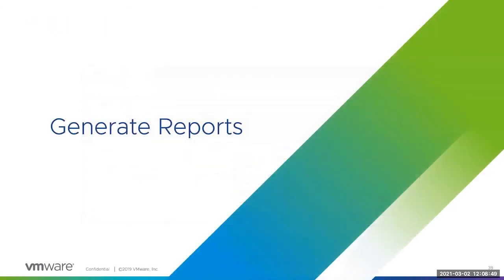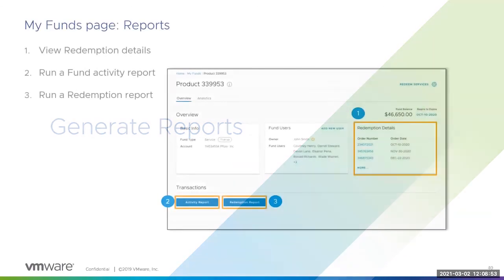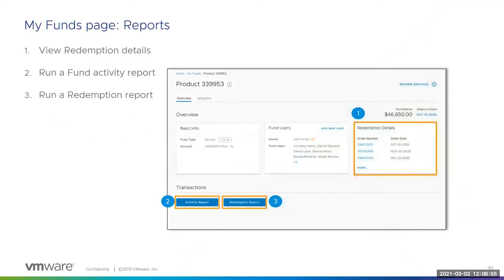There are a few reports available related to HPP funds. From the Fund Details page, you can view details about the deposits made to each fund, view redeemed products and services, download a report of all activity within each fund, and download a report of all redemptions made against each fund.